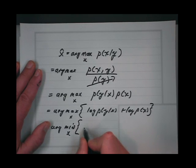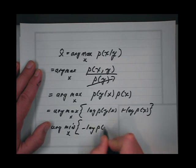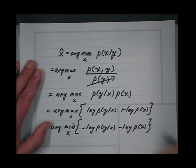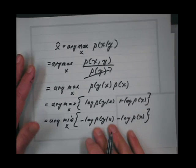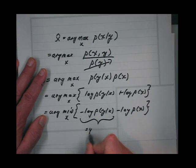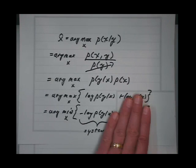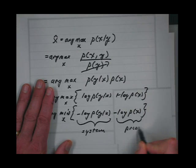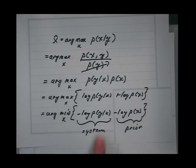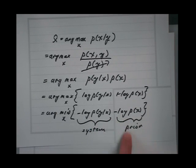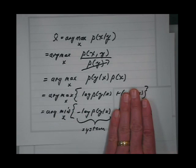So here I get: x-hat equals arg min over x of minus log p of y given x minus log p of x. The key idea is that the first term is the systems model and the second term is the prior model. The log of p of y given x is the systems model, also called the forward model, and log of p of x is the prior model.